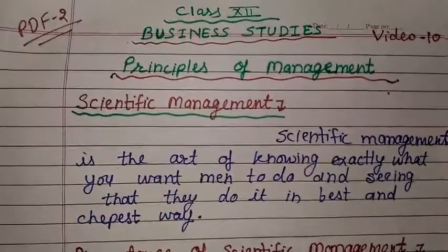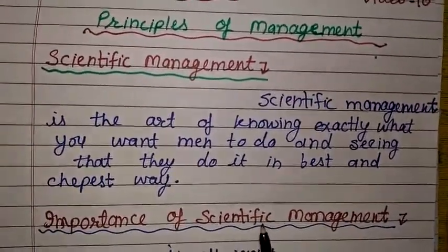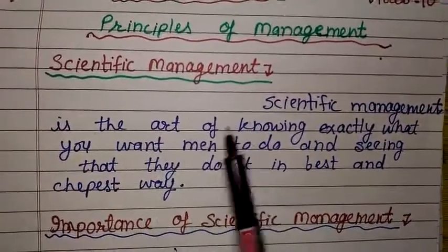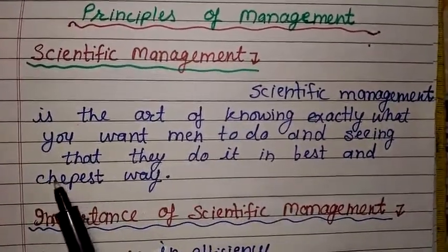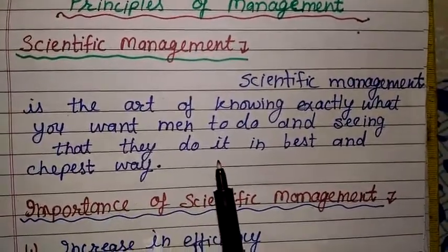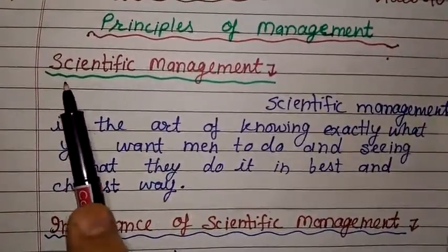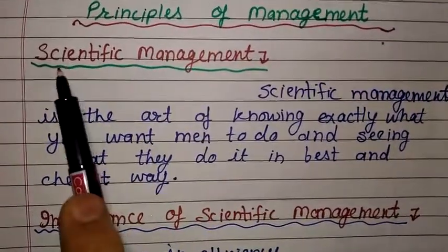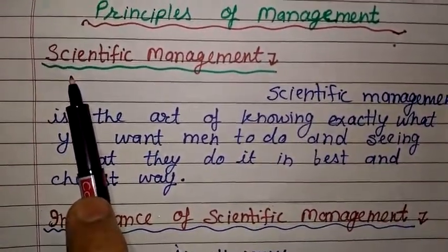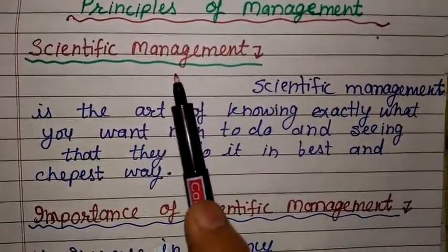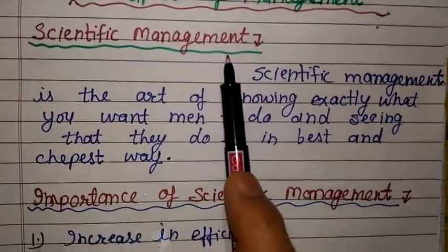This is video number 10 and in this video scientific management and its importance is explained. So, first of all, what is scientific management? Scientific management is the art of knowing exactly what you want men to do and seeing that they do it in the best and cheapest way. This is the definition given by F.W. Taylor. In general words, scientific management is the work of management done in a scientific or systematic way, based on cause and effect relationship and a few principles. When the activities of management are done in a scientific way, it is called scientific management.